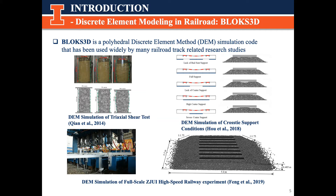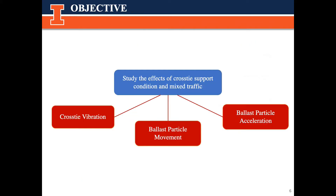The discrete element method has been widely used to study ballast and cross-tie dynamic behaviors. BLOCKS 3D is a polyhedral DEM simulation code that has been used and verified in the field of railroad. Our group has successfully simulated tracks with shear ties and developed a single-tie model for studying cross-tie support conditions. In the last two years, we developed a full-scale experiment simulation with eight cross-ties and more than 100,000 particles. BLOCKS 3D has the irreplaceable advantage of the ability to investigate individual particle behaviors and chain loading, so we are using BLOCKS 3D DEM simulation for this study. Our objective is to study the effects of cross-tie support conditions and mixed traffic through investigating cross-tie vibration, ballast particle movement, and ballast particle acceleration.